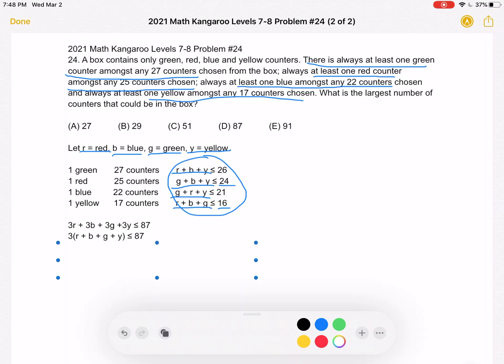And then we can factor out a 3 and then divide by 3 to get that R + B + G + Y is less than or equal to 29.